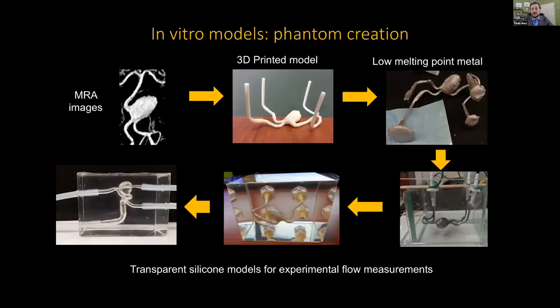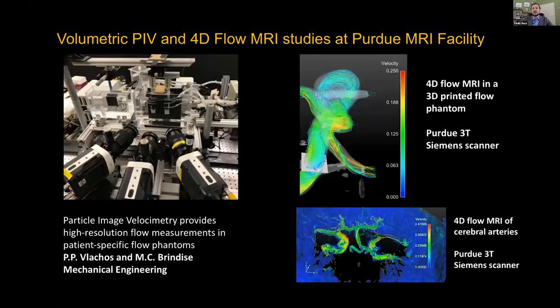We developed a method for 3D printing transparent flow phantoms for experimental flow measurements from medical images, and I started close collaboration with Pavlos Vlahos in mechanical engineering here at Purdue. In his lab, they use particle image velocimetry to obtain highly resolved, time-dependent volumetric data in these phantoms. In parallel, I started working on in vitro and in vivo flow MRI measurements at Purdue, obtaining measurements in flow phantoms and healthy volunteers on a three Tesla scanner at Purdue's MRI facility.